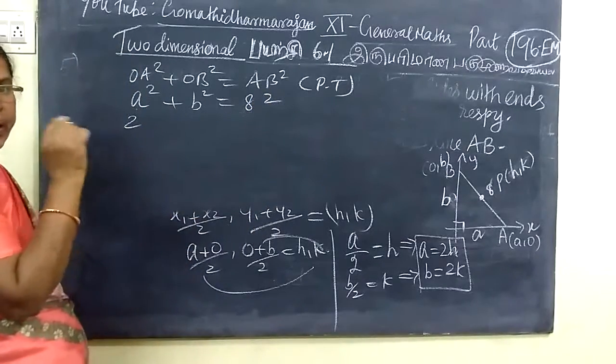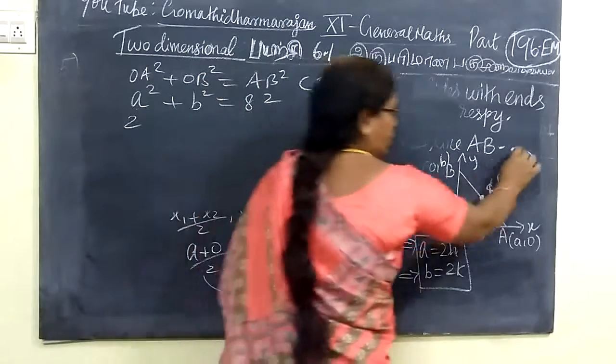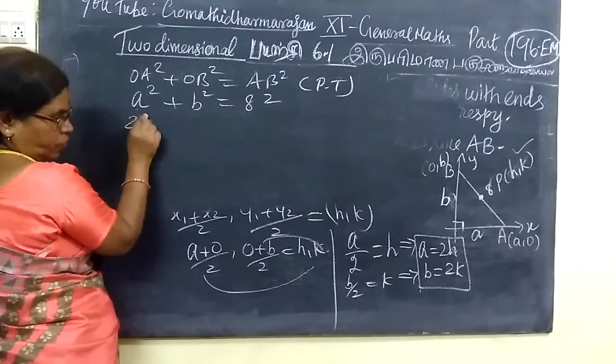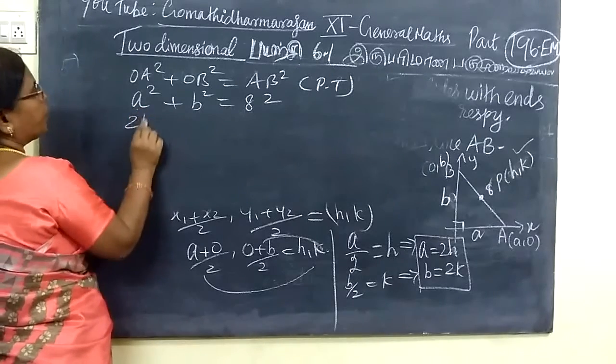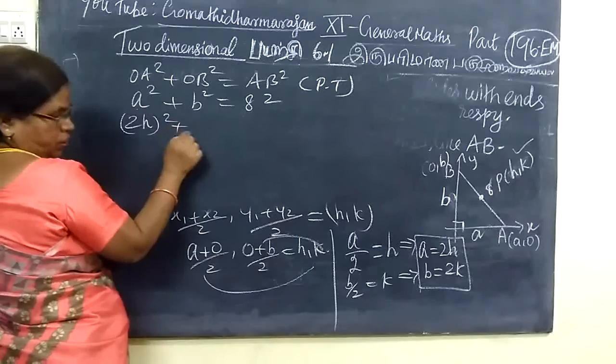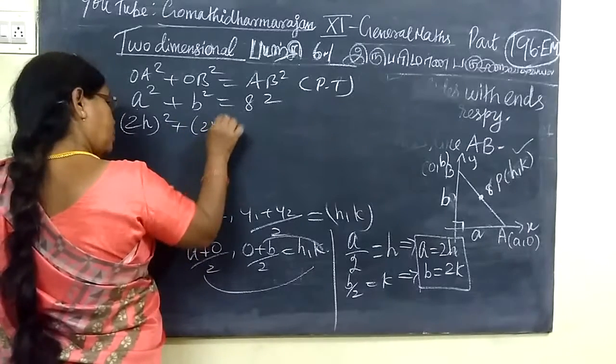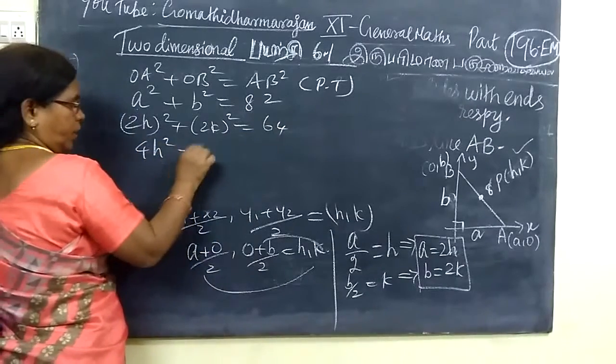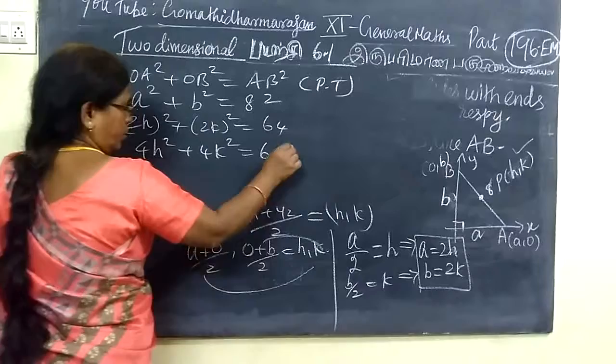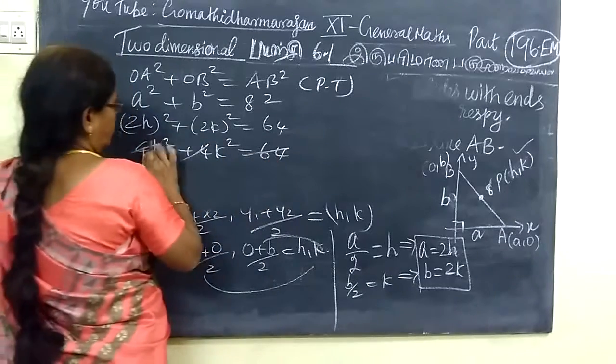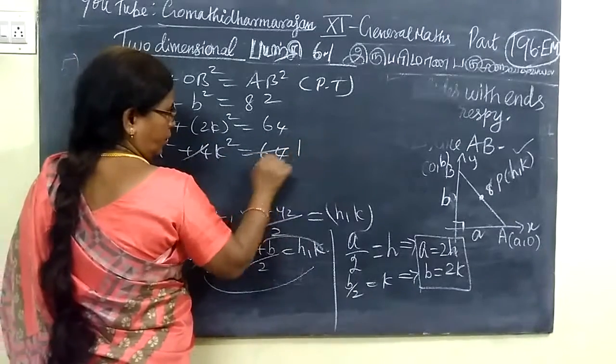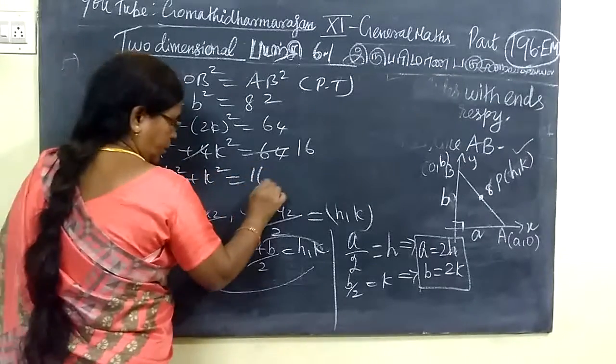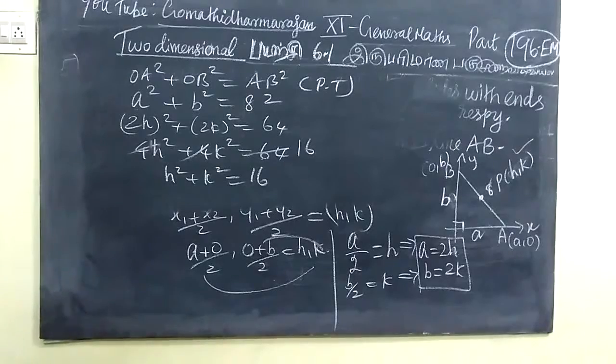AB is 8 units. In terms of a and b: a square plus b square equals 64. Substituting a equals 2x and b equals 2k, we get (2x) square plus (2k) square equals 64. So 4x square plus 4k square equals 64. Taking 4 common, x square plus k square equals 16.